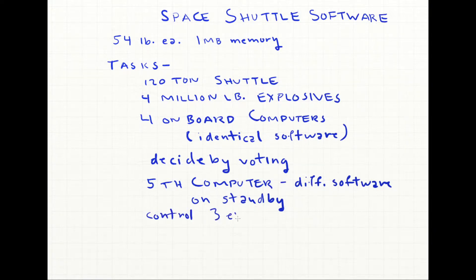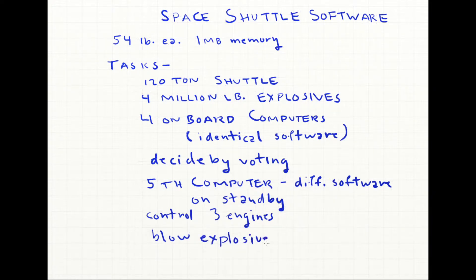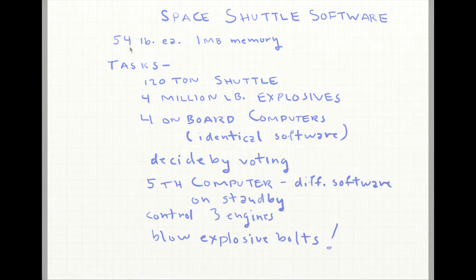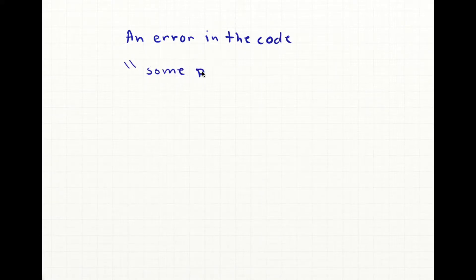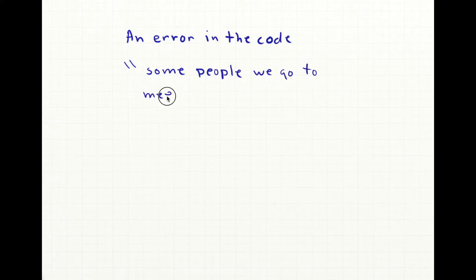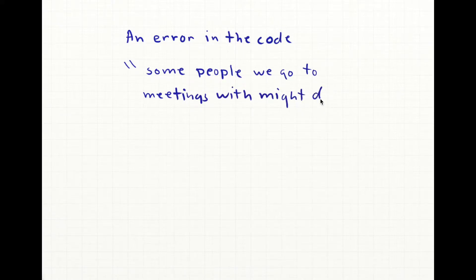All these computers control three enormous engines on launch. They have these gimbals that move around, which is critical. They also give the orders to blow the explosive bolts that separate the solid rocket boosters from the space shuttle. All these complex things that this software has to control. A developer having an error in their code — a bug — is really, really a bad thing. One of the developers on the team said: if the software isn't perfect, some of the people we go to meetings with might die.